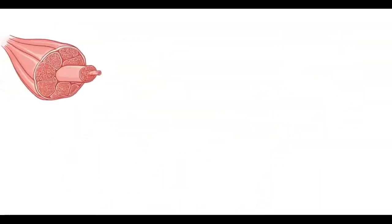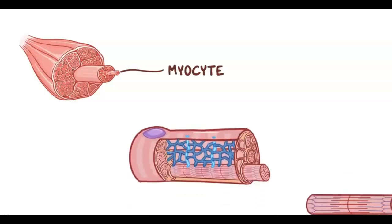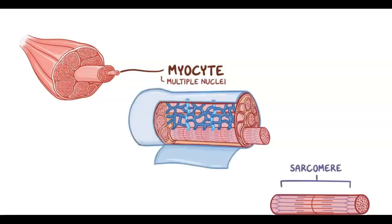Now, before we continue with the actual events that happen during the contraction, let's focus on one muscle cell, a myocyte, and its functional units, called sarcomeres. A myocyte is a long, cylindrical cell with multiple nuclei located just below the sarcolemma, which is the cell membrane.